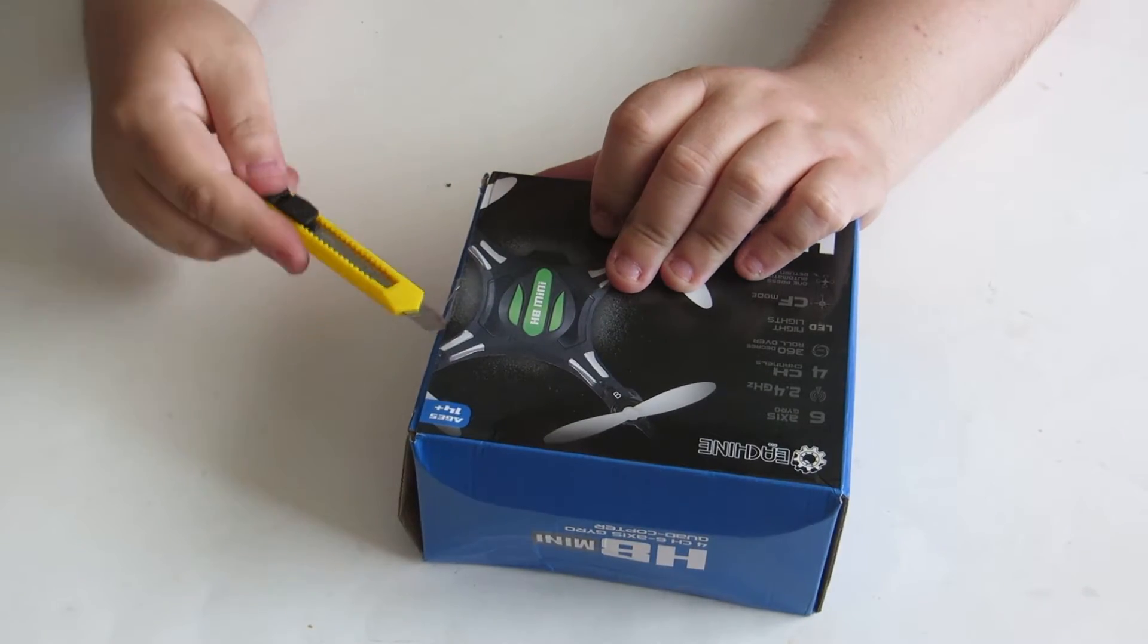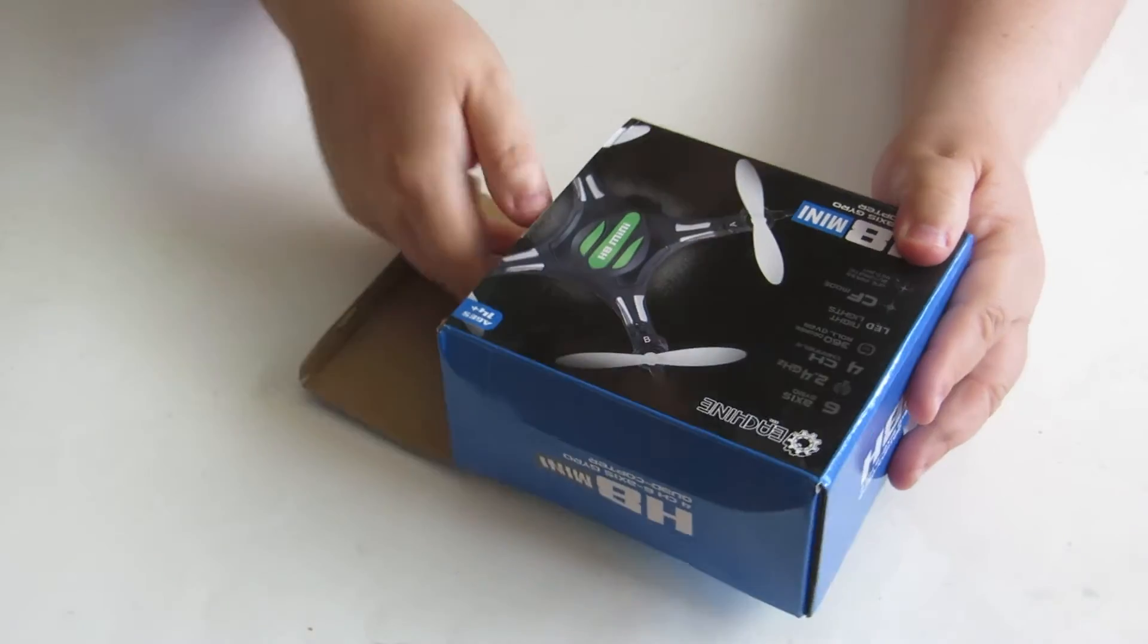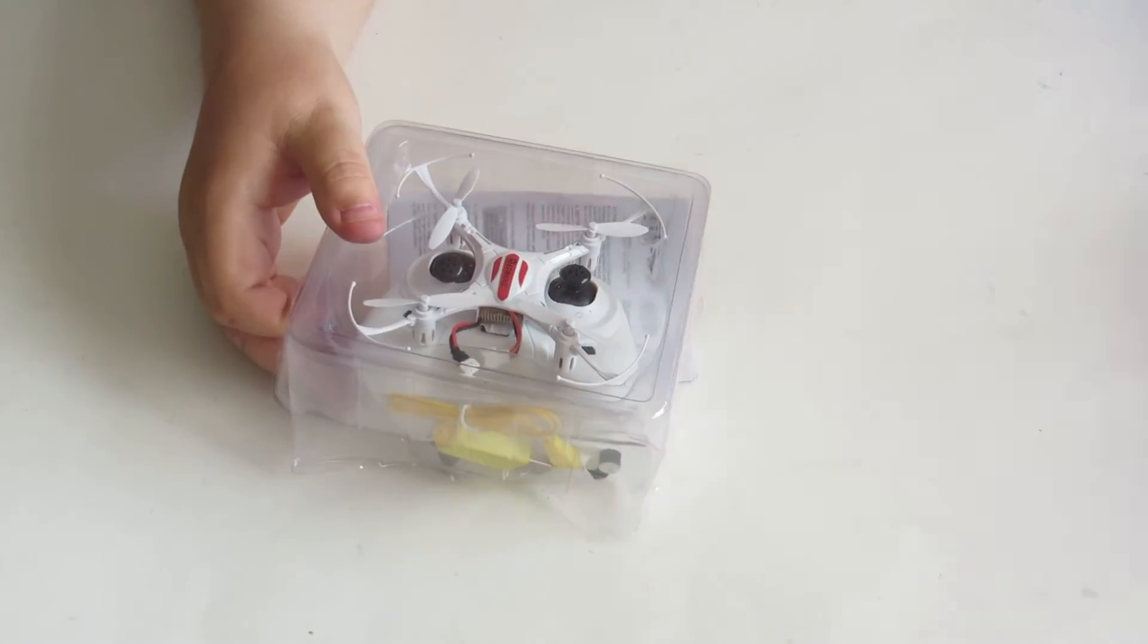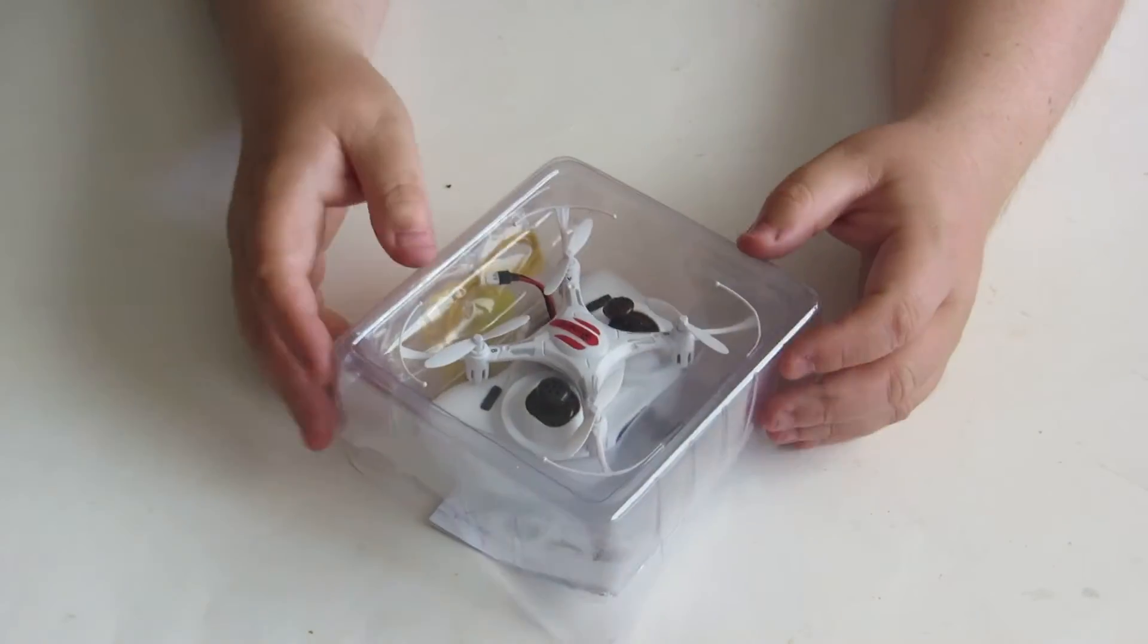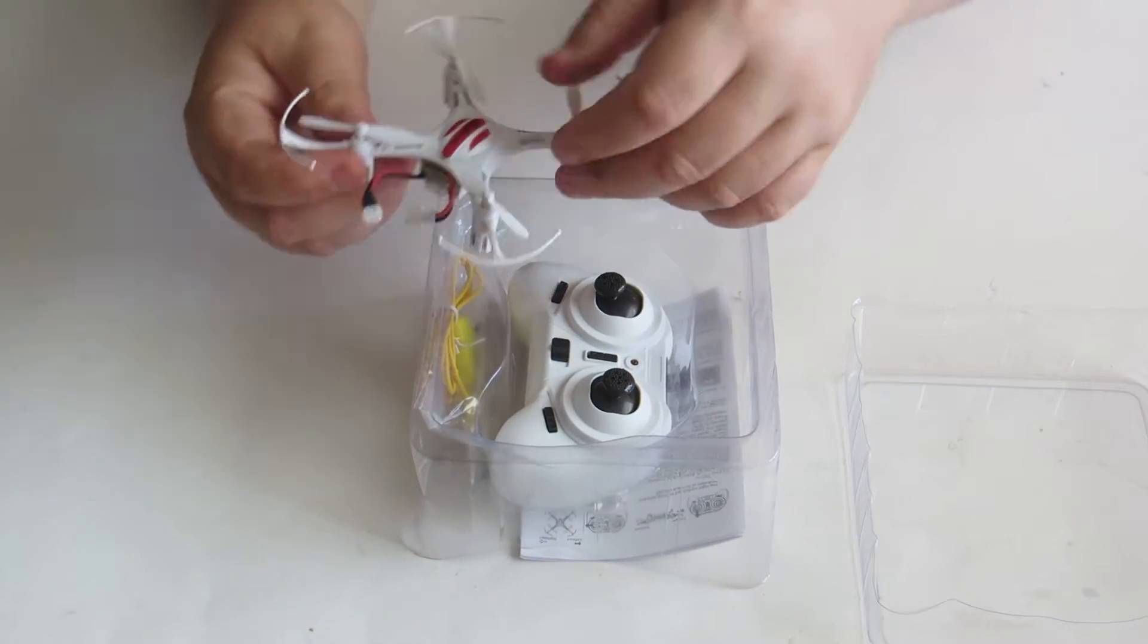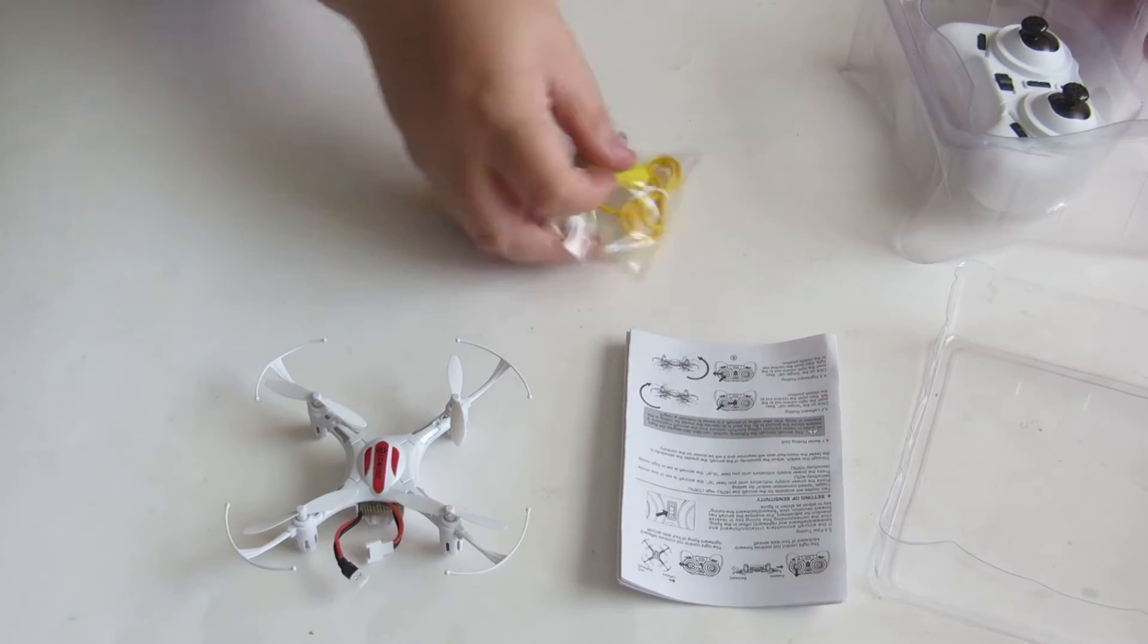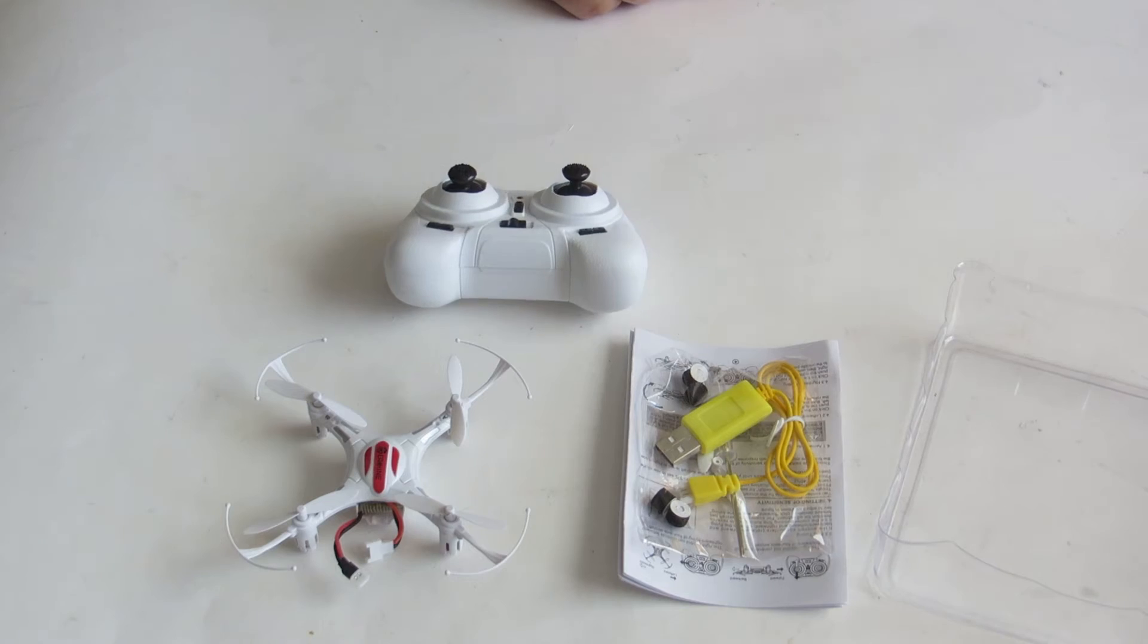So let's see what we have inside the box. I opted out to get a white version. You can get it also in black and I have a mode 2 controller with the throttle on the left side.